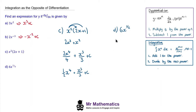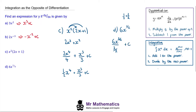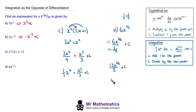For question d, we have 6x to the half. We add 1 to the half — to add fractions we need a common denominator, so one half plus one is 3 over 2 — giving 6x to the 3 over 2, divided by the new power 3 over 2, plus the constant term. We can simplify by multiplying numerator and denominator by 2 so the twos cancel, giving 12x to the 3 over 2 over 3 plus c. Simplifying 12 over 3, we get 4x to the 3 over 2 plus the constant term.